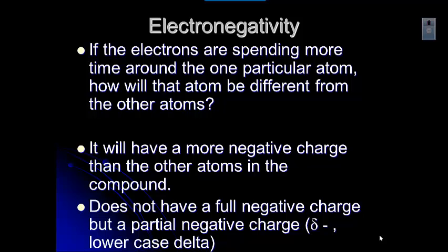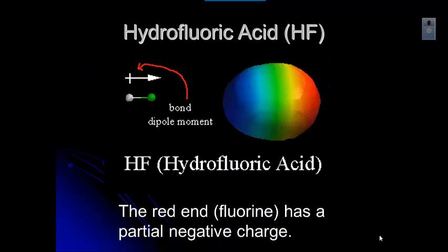Let's look at a compound that has a dipole-dipole force. In hydrofluoric acid — hydrogen and fluorine bonded — the red end is where the fluorine atom is. The electron from the hydrogen is attracted to the fluorine, spending more time around it and making it slightly more negative. The blue end, the hydrogen end, becomes slightly more positive. You can see it has two poles: a positive pole and a negative pole. That's where the term 'dipole' comes from.